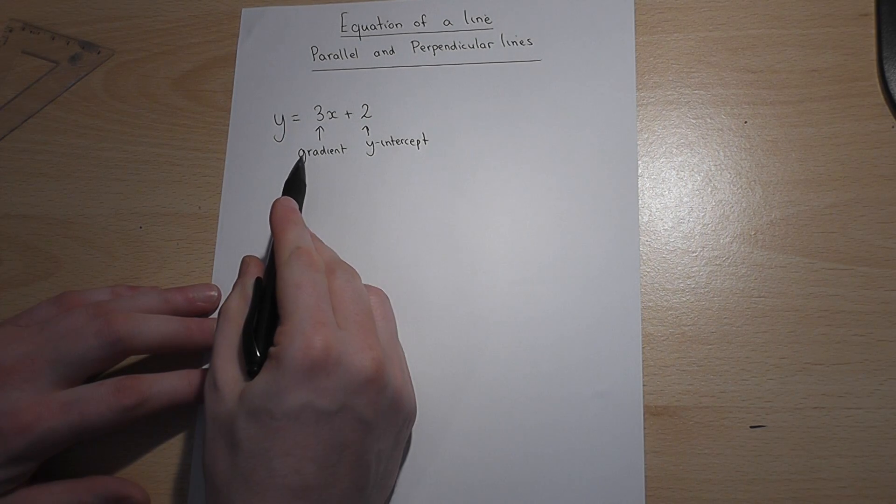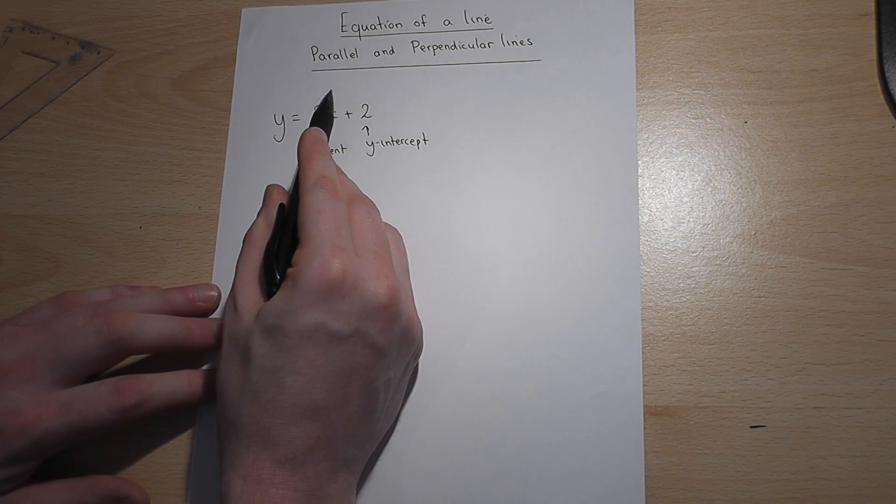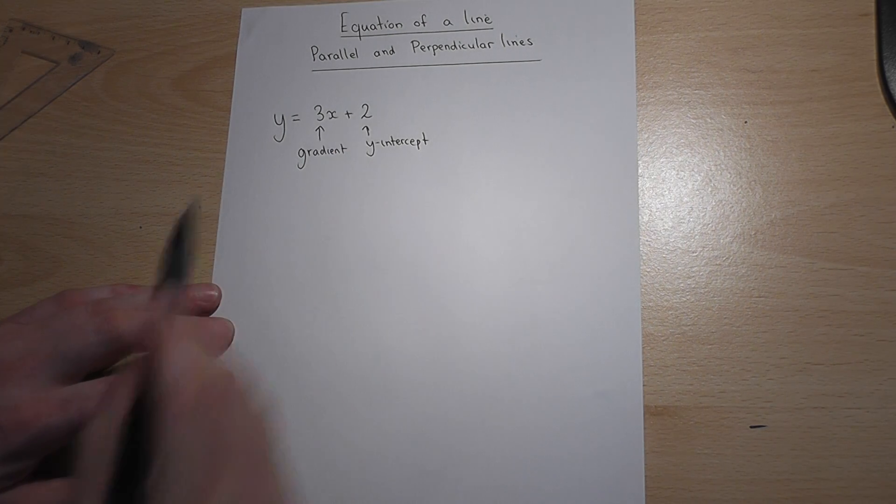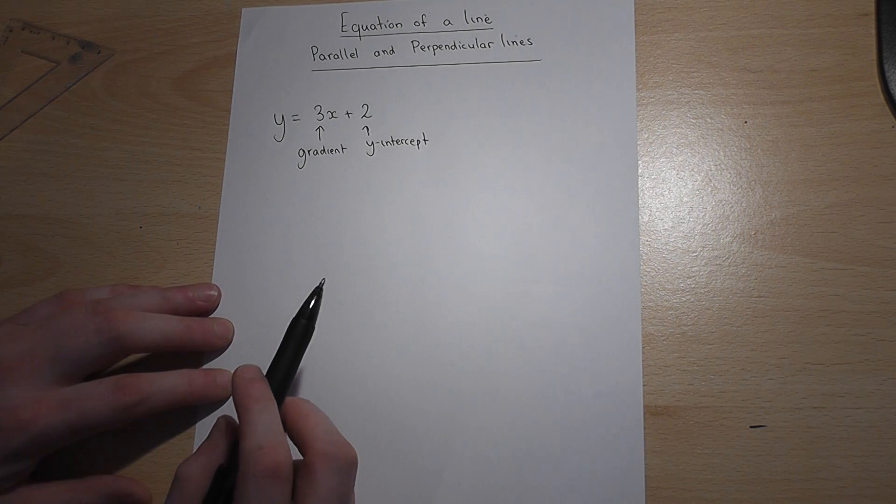This means that for every one across, the line goes up by 3, and this value tells us where the line hits the y-axis.